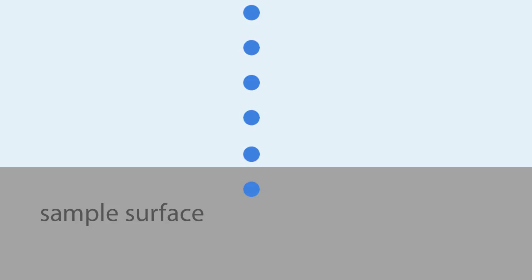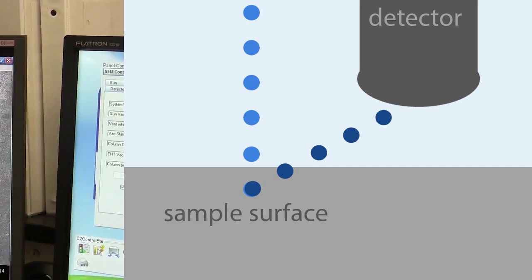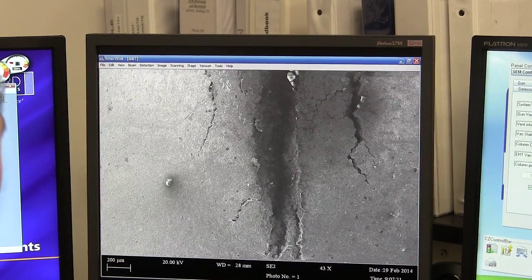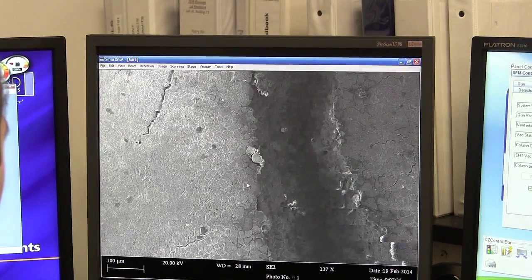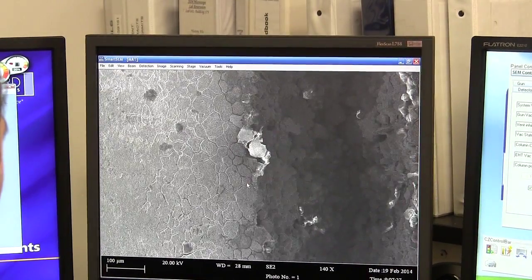When the beam hits the surface, it knocks loose electrons from the atoms at the surface of the material. Detectors in the microscope capture the electrons escaping the surface. Because we're taking things only from the surface into the detector, that gives us surface topographic information or highs and lows, morphology type of information.